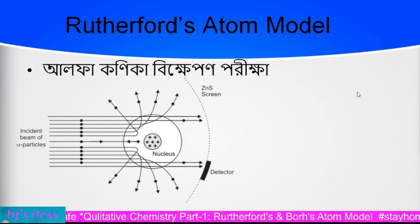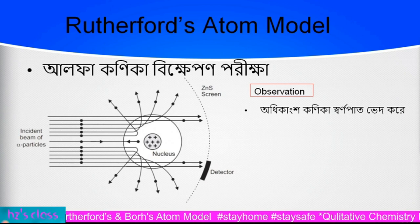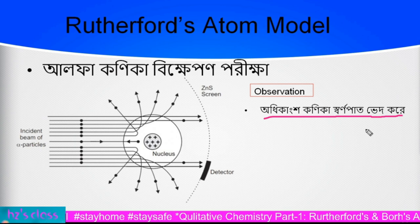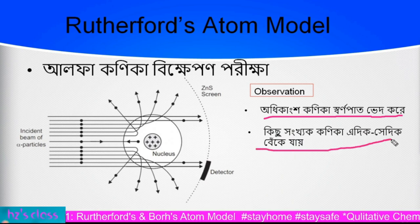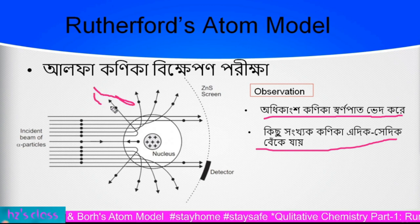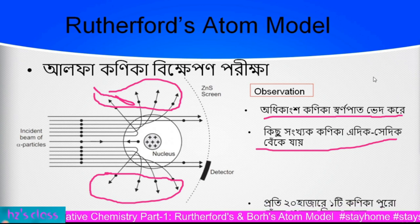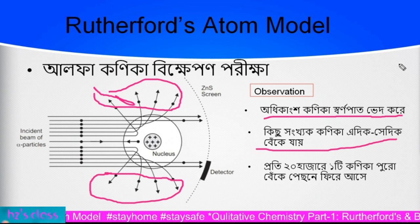The observation of Rutherford is what we see. The first observation is that most alpha particles pass straight through. The third observation is that a small number of alpha particles are deflected back.